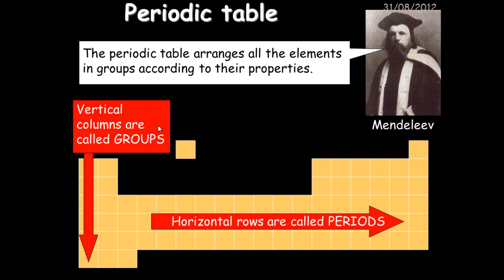Now the vertical columns which are groups, they indicate elements which have very similar properties to one another. So if it's within the same group, it has a very similar property to all elements found within that group.